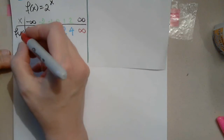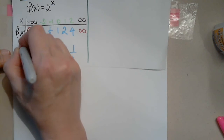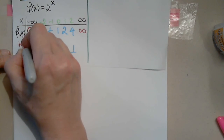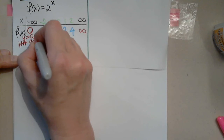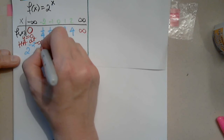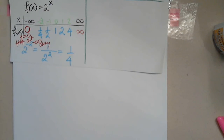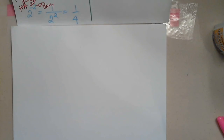This is a situation we've never seen before. This is a horizontal asymptote at negative infinity only. Let's graph this part.